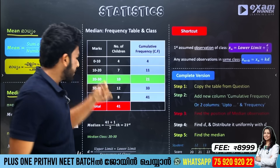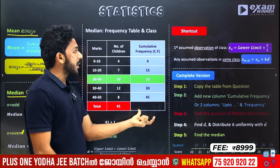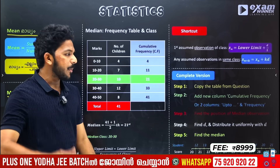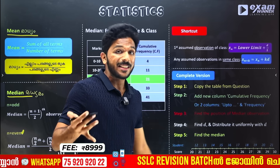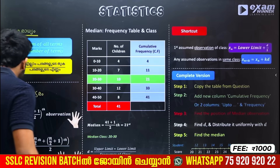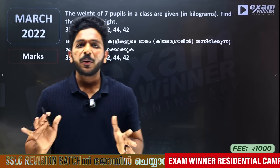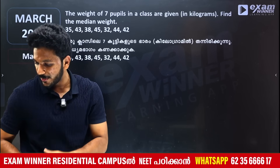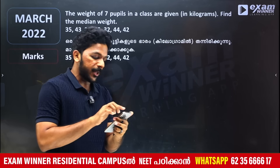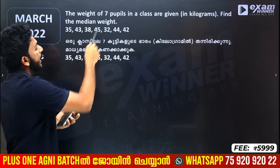These questions follow the same formula. The table uses cumulative frequency as a simple symbol. There is a long method and a shortcut method — we will ask you the long method. The first question is a PYQ (previous year question). The weight of 7 pupils is given, and you have to find the median weight.